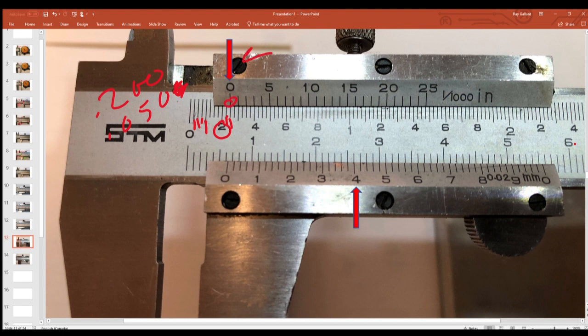Then the zero lines up according to our arrow here. So this size is 250.